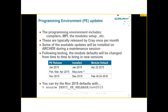Now moving on to programming environment updates — the part of the software stack most relevant to applications. This covers the available compilers, the set of libraries, the programming environment for choosing a particular compiler, and the surrounding module environments. Cray normally releases a new version approximately once a month, but they're not all installed on Archer — installations only happen during maintenance sessions. Looking back over the last year, there was a Cray PE release in January 2015 that was installed that same month, making its components available immediately.